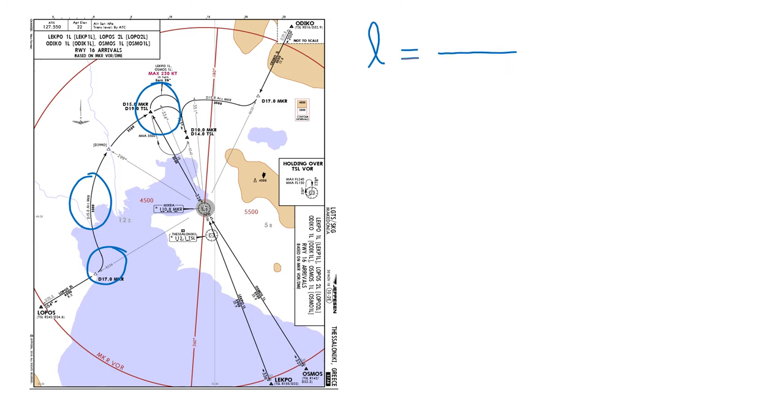So the arc length will be L equals theta divided by 60 times R, which will be 25 nautical miles.